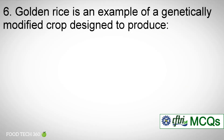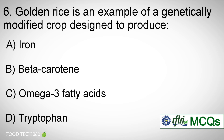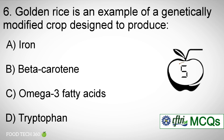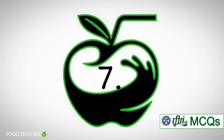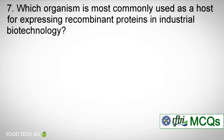Question number six: Golden rice is an example of a genetically modified crop designed to produce — Options: A) Iron, B) Beta carotene, C) Omega-3 fatty acids, D) Tryptophan. Correct answer: B) Beta carotene.